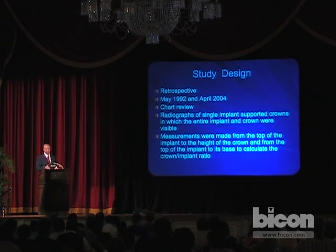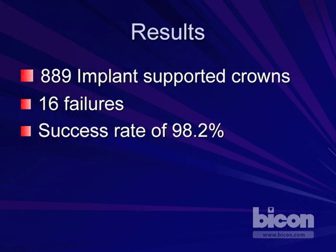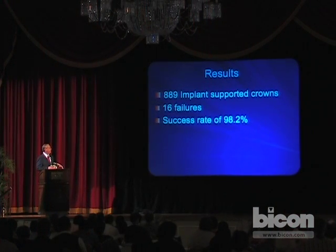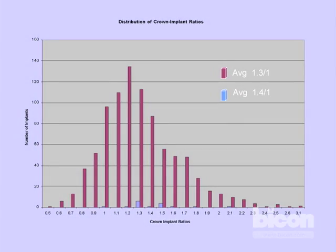We purposely designed this very simple study to look only at one variable: the crown implant ratio. The results: there were 889 implants included in the study and only 16 failures, which made statistical analysis of the data difficult. So I decided to simply describe it with descriptive statistics.